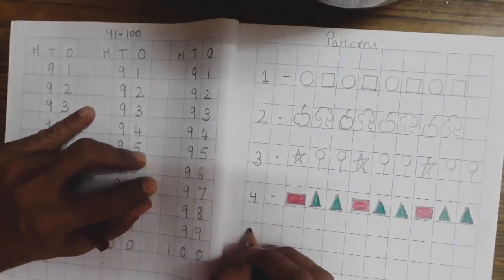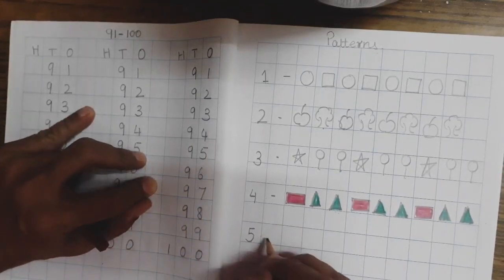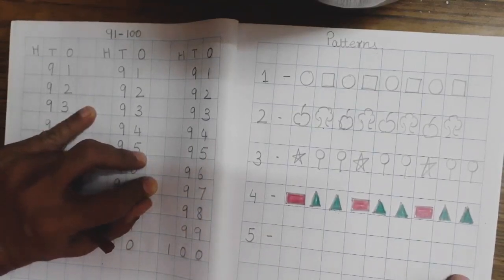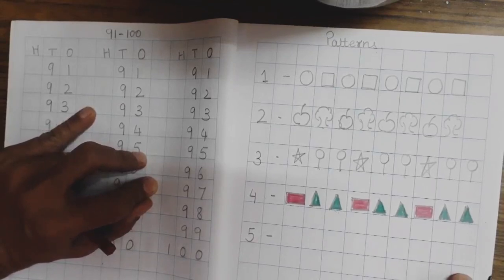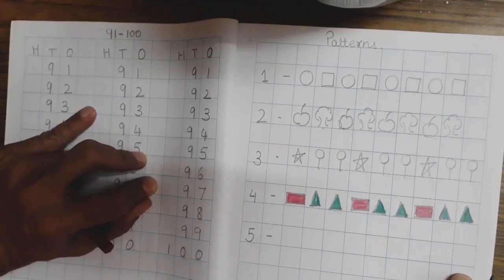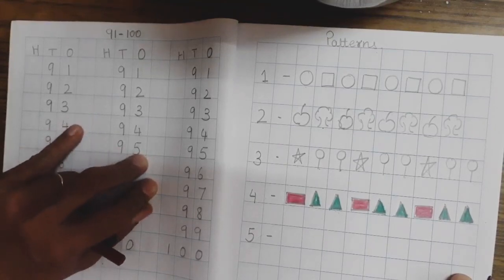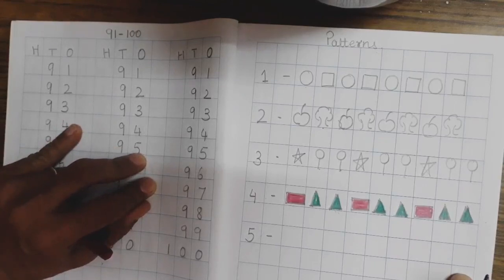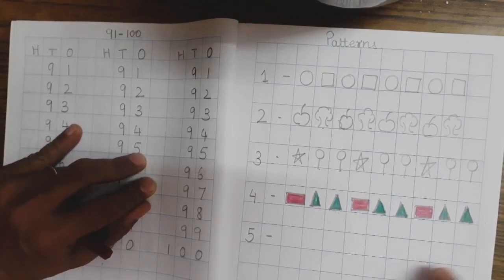Now, children, the 5th one, you are going to draw on your own. So, you will decide what you would like to draw. Whether you would like to draw a candy or a flower, flower or any other fruit, whatever. The pattern, you will decide and you are going to draw on your own.